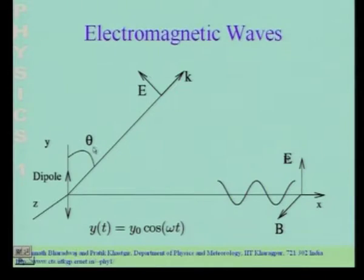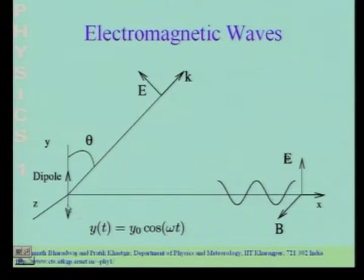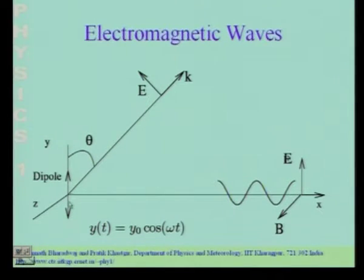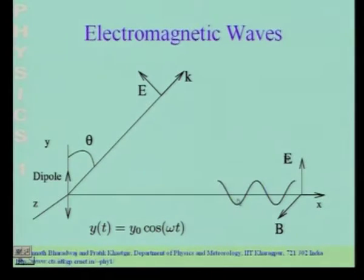Good morning. Let me first recapitulate some of the important things which we have learnt in the past few classes. We first considered a situation where we have an electric dipole, which is essentially two metal wires aligned and connected to a voltage source. If you feed a sinusoidal voltage, the charge particles inside these two metal wires oscillate up and down — you have an oscillating electric dipole — and at a large distance you get a sinusoidal plane wave.